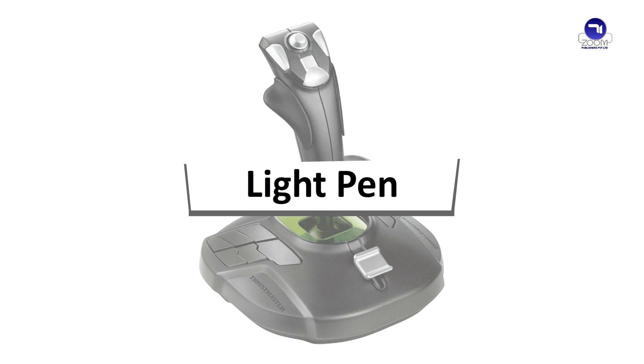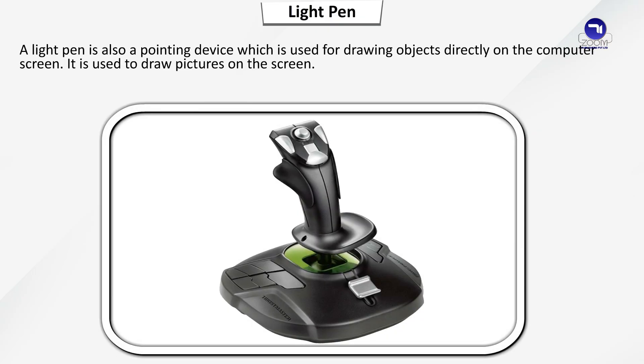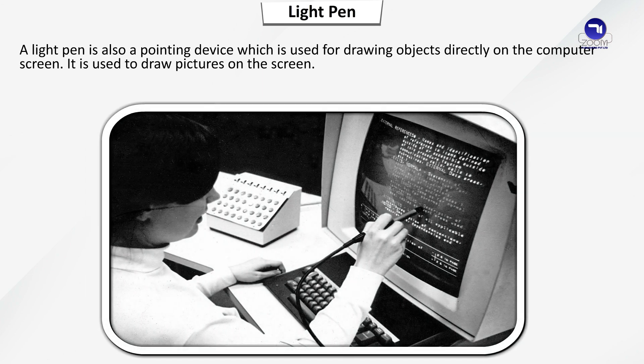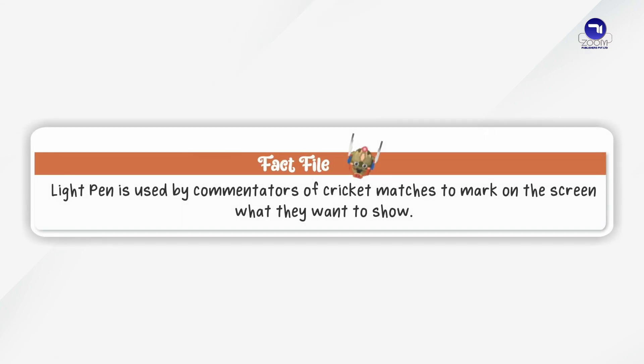A light pen is also a pointing device which is used for drawing objects directly on the computer screen. It is used to draw pictures on the screen. Fact File: Light Pen is used by commentators of cricket matches to mark on the screen what they want to show.